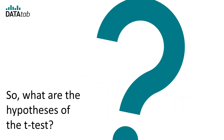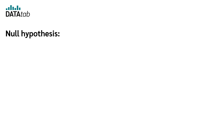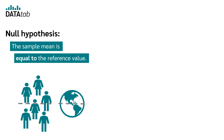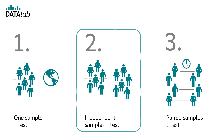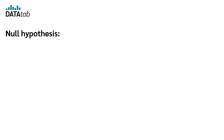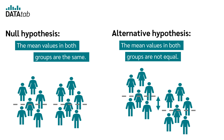What are the hypotheses of the t-test? Let's start with the one-sample t-test. The null hypothesis is that the sample mean is equal to the given reference value — so there is no difference. The alternative hypothesis is that the sample mean is not equal to the given reference value. In the independent t-test, the null hypothesis is that the mean values in both groups are the same, so there is no difference between the two groups. The alternative hypothesis is that the mean values in both groups are not equal, so there is a difference between the two groups.